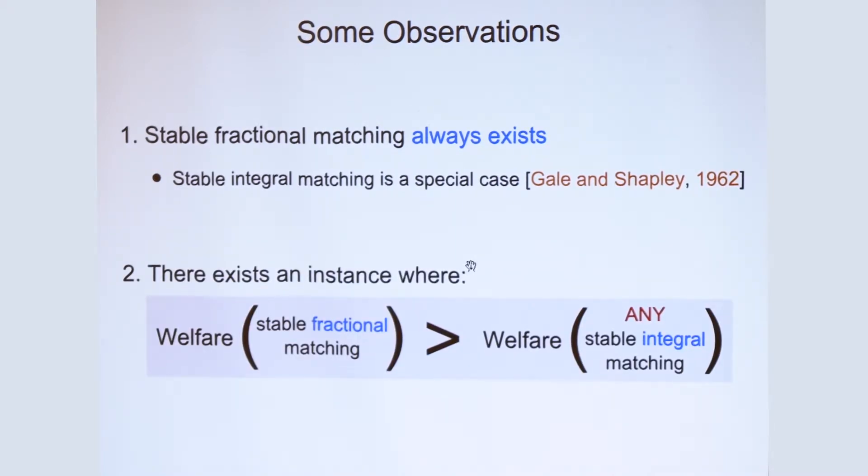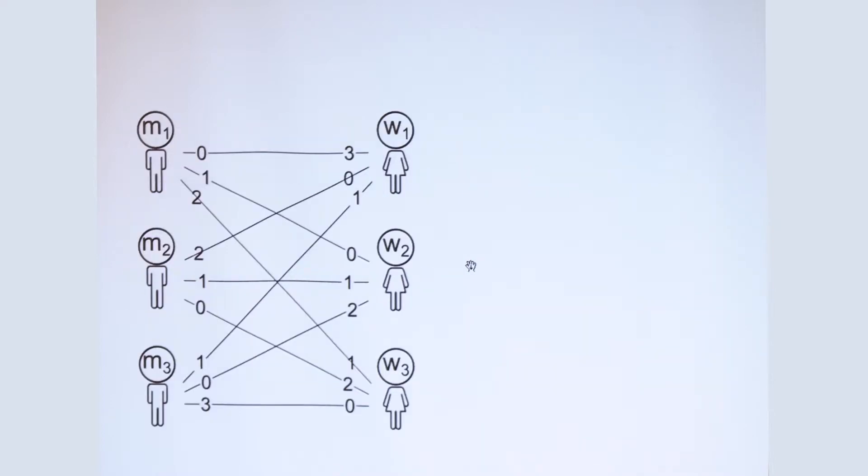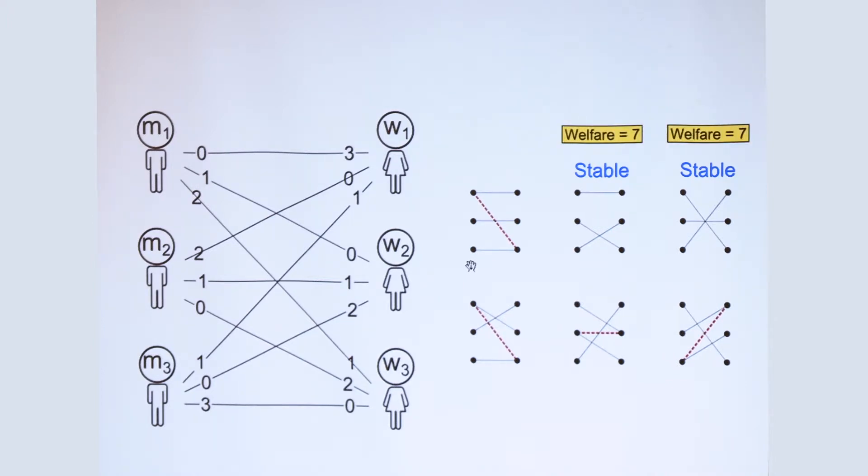Perhaps more interesting implication concerns the welfare of the matchings. So one can show that there is an instance with cardinal preferences where the welfare of a stable fractional matching can exceed the welfare of any of the integral stable matchings. So in fact, the instance that I showed you earlier satisfies this. So this instance has three factorial integral matchings, only two of which are stable. And each of those stable matchings has a welfare of seven, just the sum of the agent's utilities.